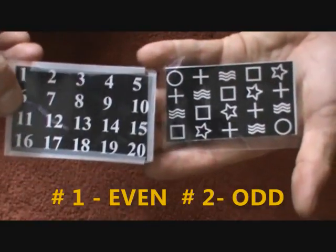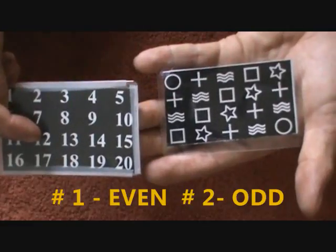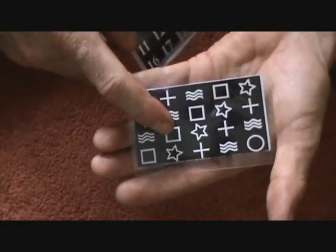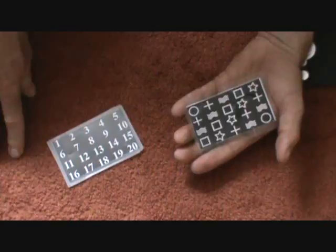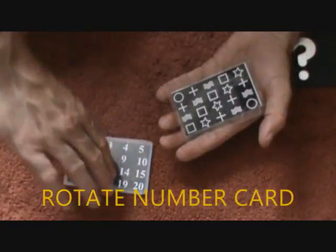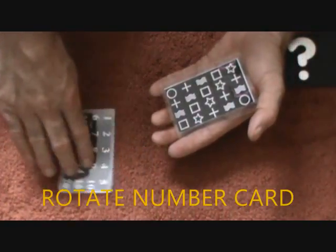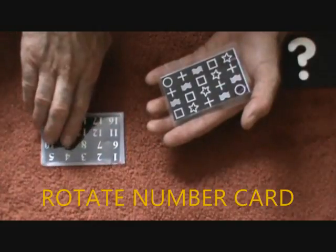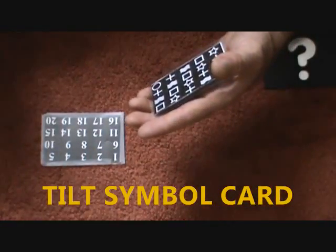Let's say volunteer number one thinks of twelve. So on here, they're thinking of the square. Here is the move. You would actually turn this around to face spectator number two, who's going to think of an odd number, and you would just tilt it in their direction.